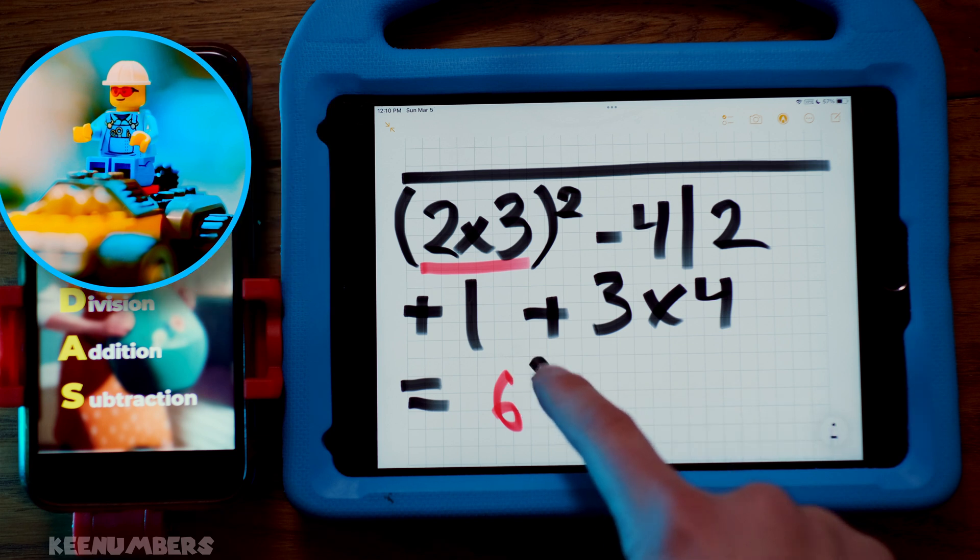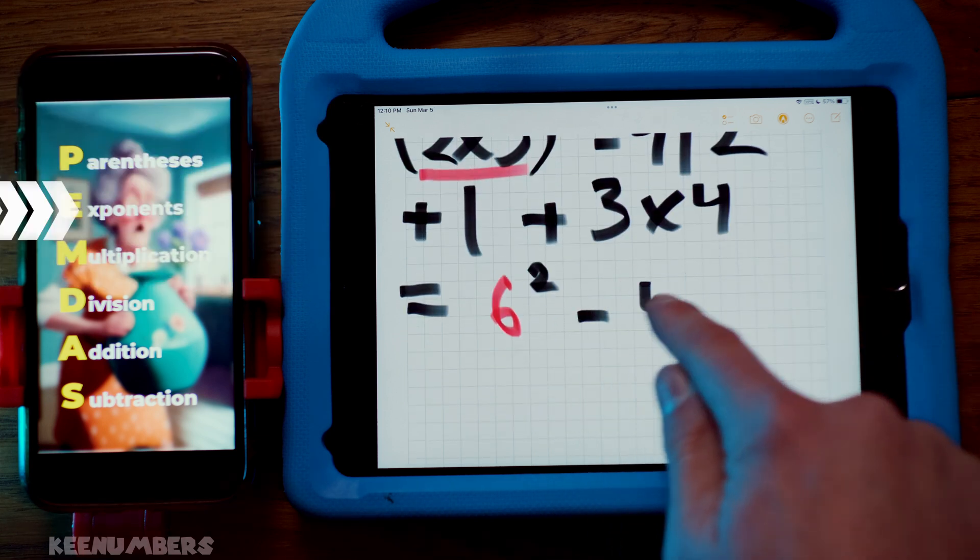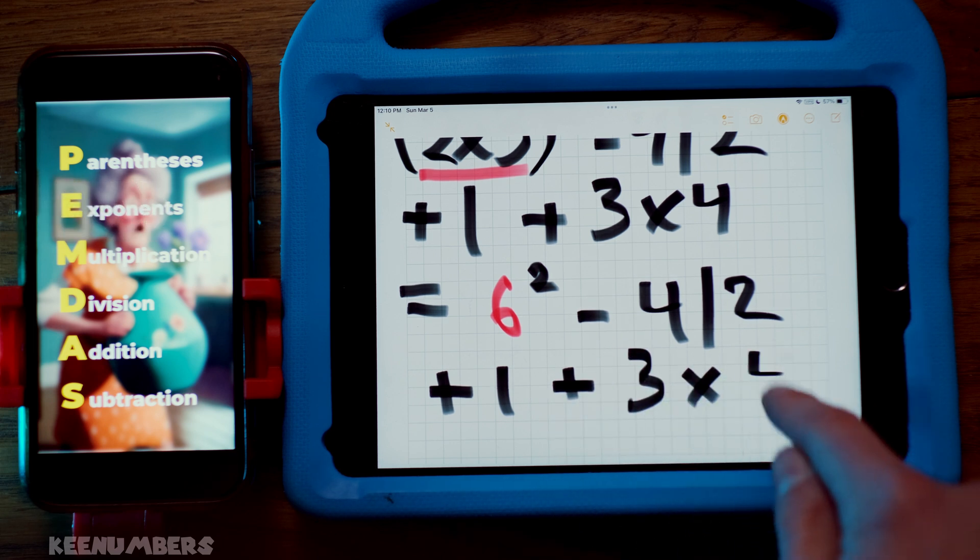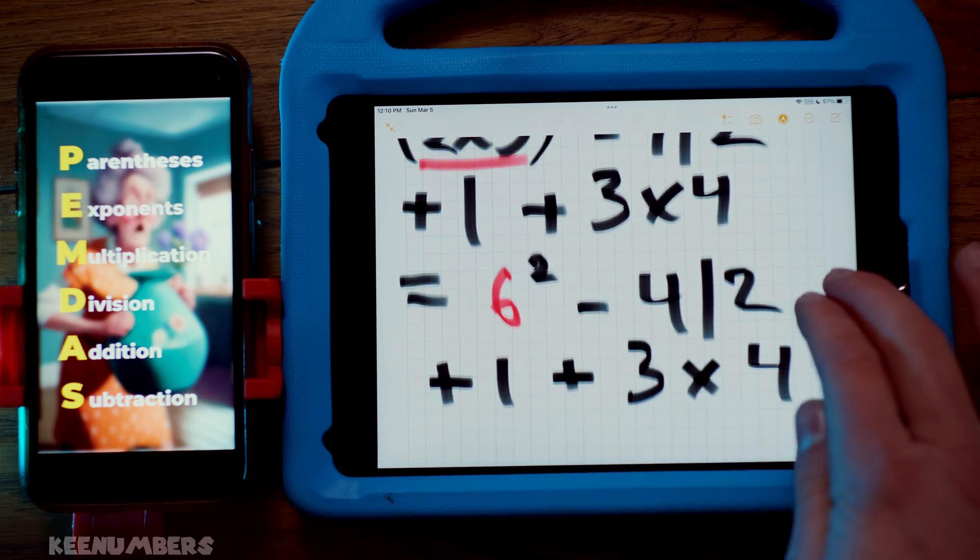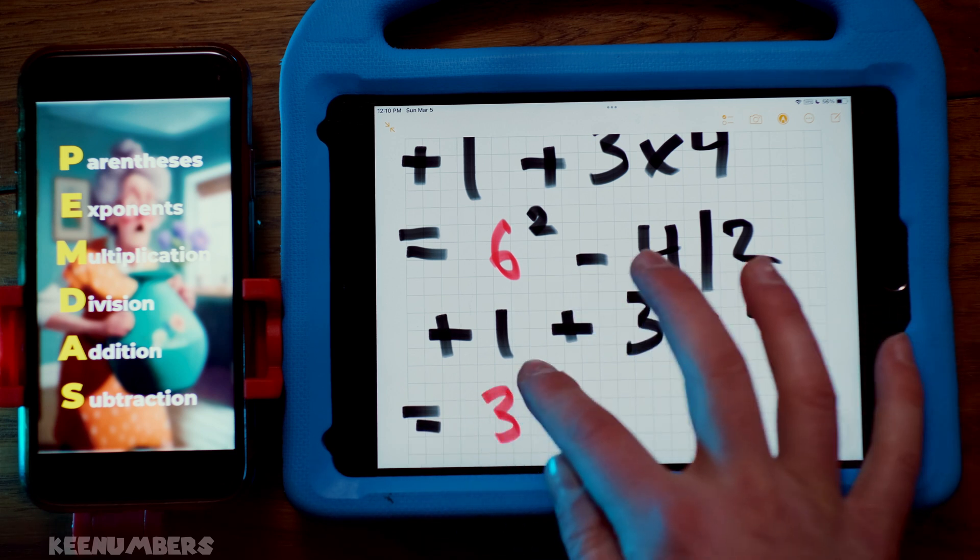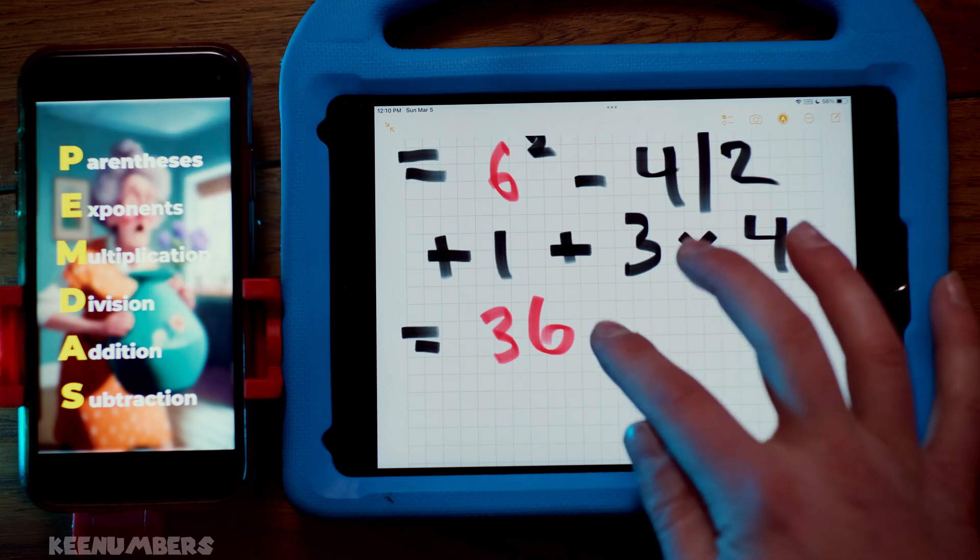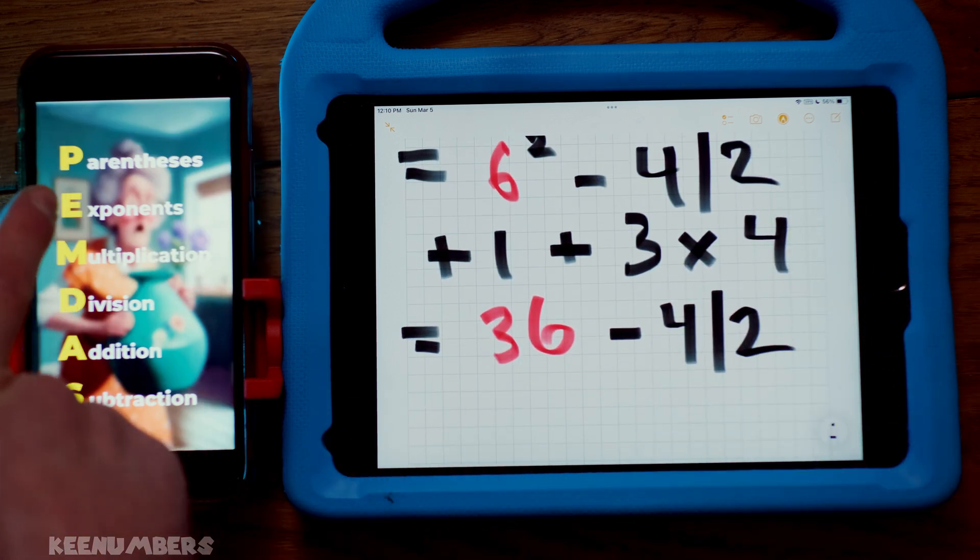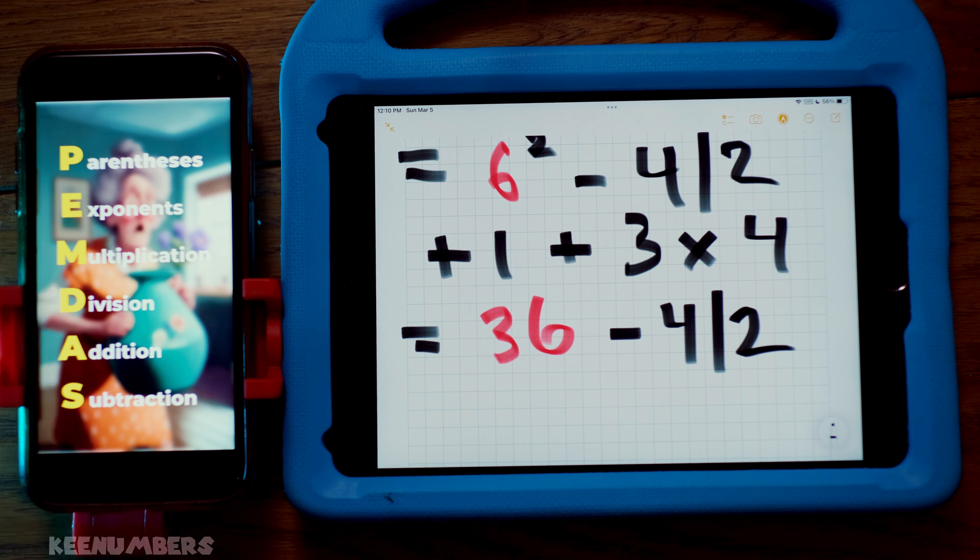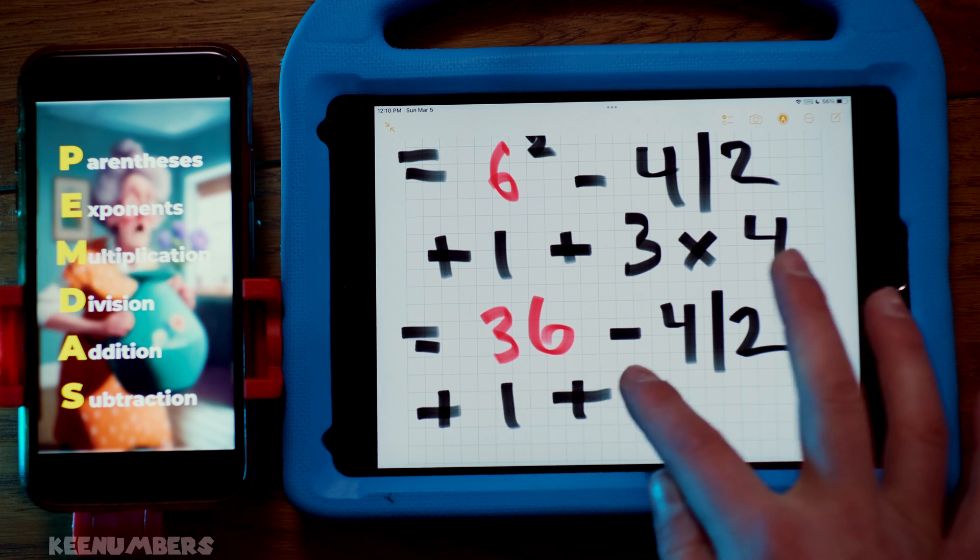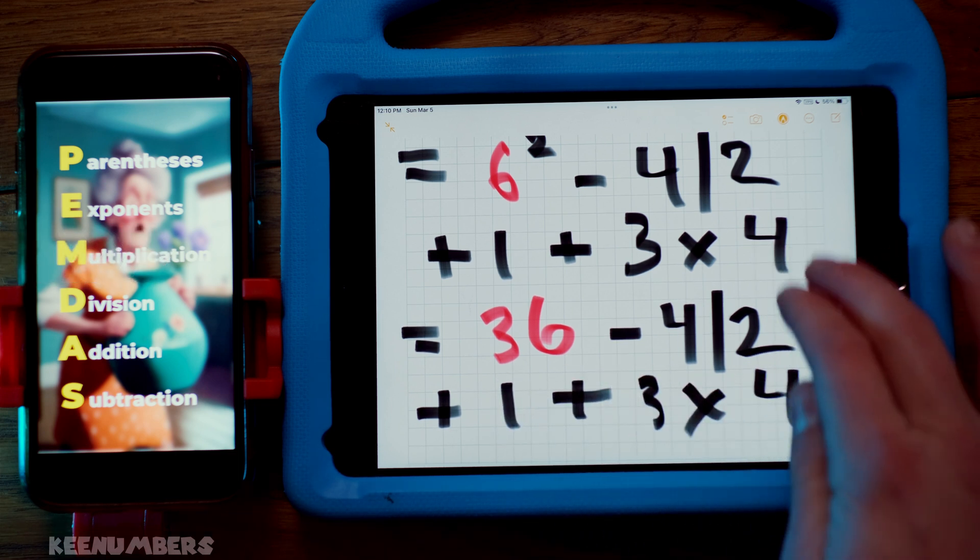And then you're going to deal with the exponents. So 6 squared minus 4 divided by 2 plus 1 plus 3 by 4. Hey, 6 squared, you know the answer to that. That's just 36. And now you can look at the M in multiplication. Multiplication is next. What is the multiplication you're dealing with? 3 by 4. You already know the answer to that. 3 by 4 is simply 12.